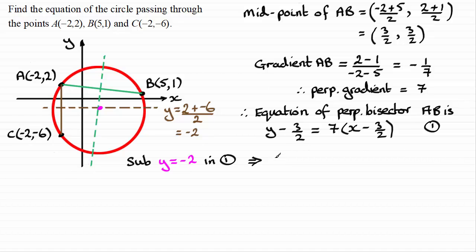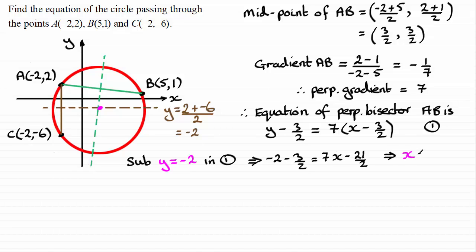Substituting y = −2 into equation 1: −2 − 3/2 = 7x − 21/2. Adding 21/2 to both sides: −3/2 + 21/2 = 18/2 = 9, so −2 + 9 = 7, giving 7 = 7x. Dividing both sides by 7, x = 1. Therefore the centre of the circle has coordinates (1, −2).